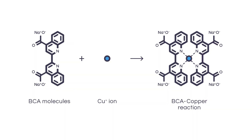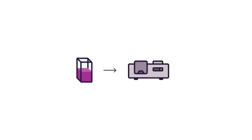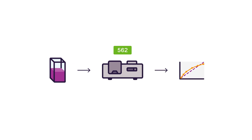After the biuret reaction is done, one cuprous cation interacts with two BCA molecules that get chelated, forming a water-soluble complex that is violet to the naked eye. This complex also has an absorbance peak at 562 nanometers, which allows us to estimate protein concentration in any given sample with the aid of a spectrophotometer and a standard curve.